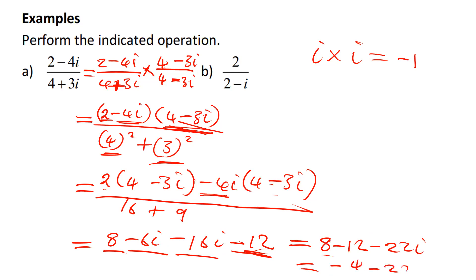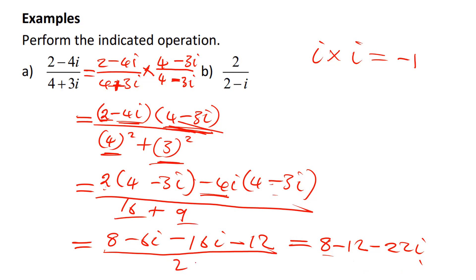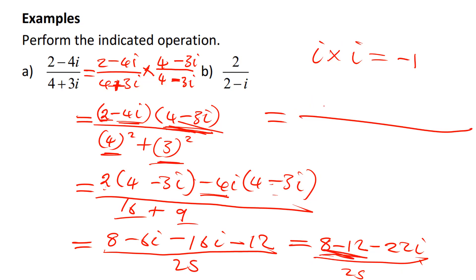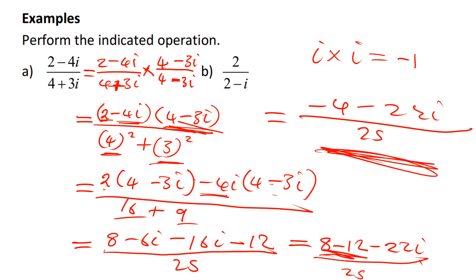Collecting like terms: 8 and −12 give −4, and −6i and −16i give −22i. The denominator is 25. So the final solution is (−4 − 22i) / 25.